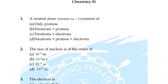Correct answer is option D. Question number six: in which of the following arrangements the order is not according to the property indicated against it? Correct answer is option B.